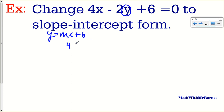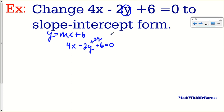So 4X minus 2Y plus 6 is equal to 0. I show my students two different ways to do this: always take everything other than Y to the right side, or if the Y term is negative, take that to the right side. I prefer the second way. Since my Y coefficient in general form happens to be negative, I'm going to add 2Y to both sides. So I end up with 4X plus 6 is equal to 2Y. That way if I did it the other way I would have a bunch of negatives — the 4X would be negative 4X, the positive 6 would be negative 6, and I'd have to change all my signs.